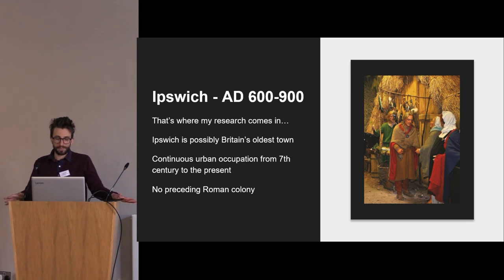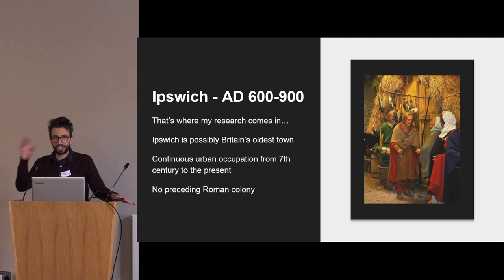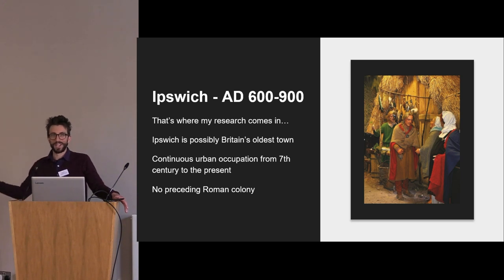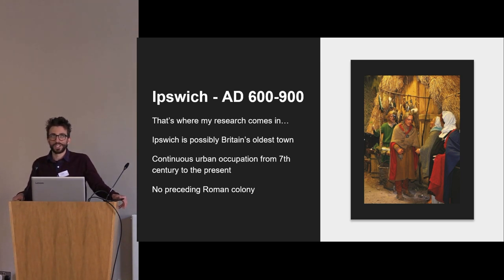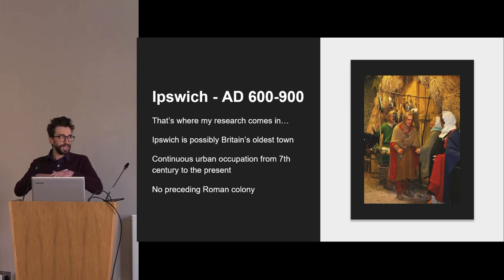Ipswich is arguably Britain's oldest town that's been continuously inhabited — there's definitely a lot of room to disagree with that. Ipswich has had urban characteristics from the 7th or 8th century continuing up to the present. It has basically been a town since the year 720 or 730 up until today. And what's quite new about Ipswich is that there's no preceding Roman colony or town here. What we're seeing is the making of an urban framework — urban fabric making.